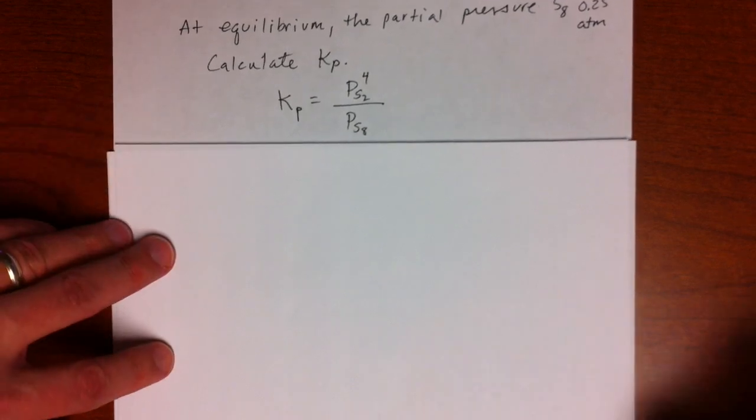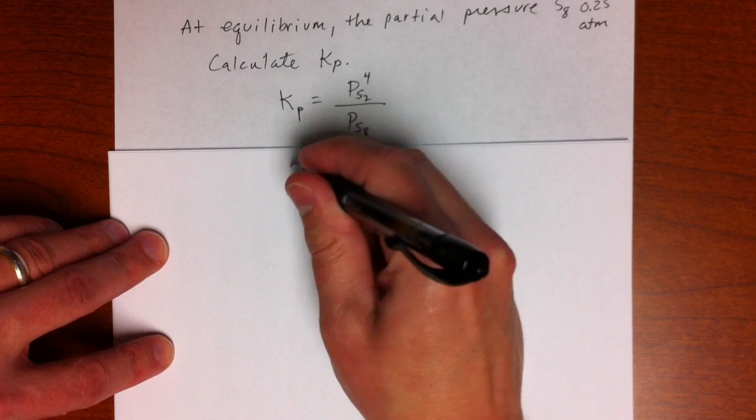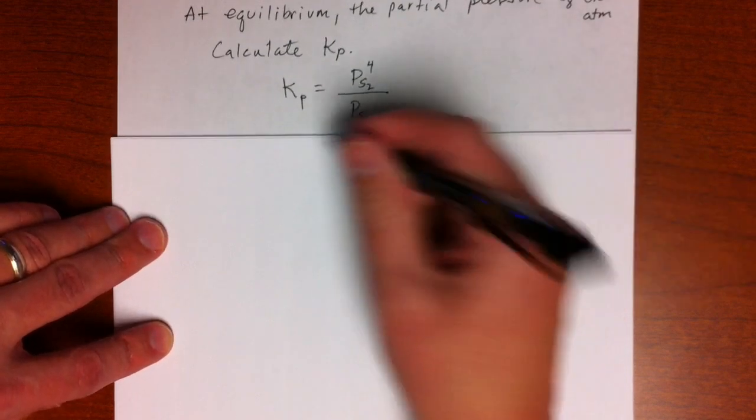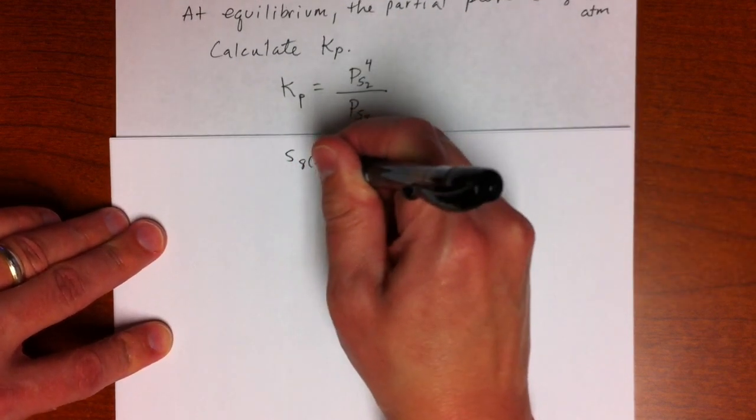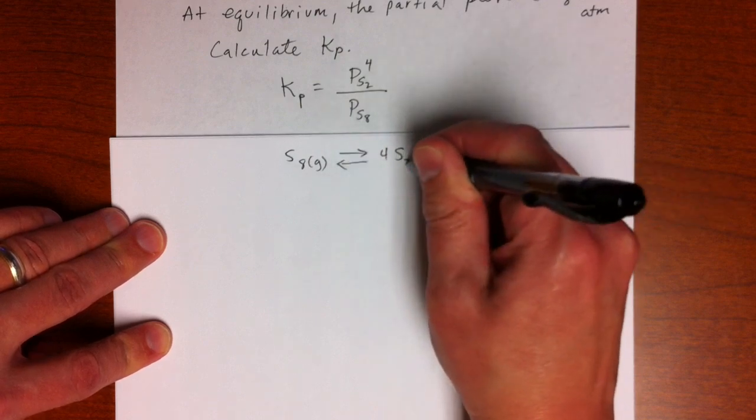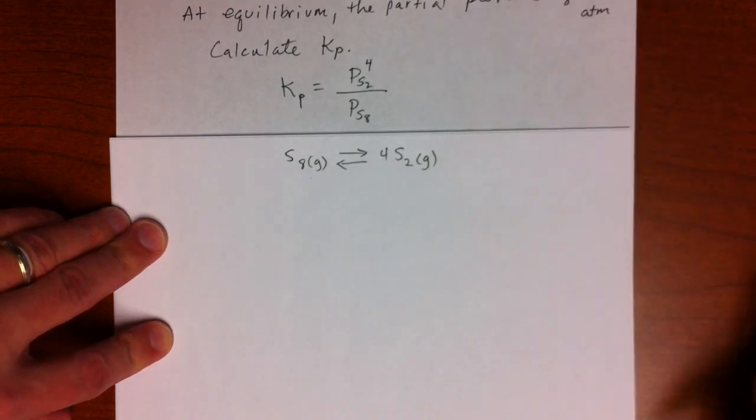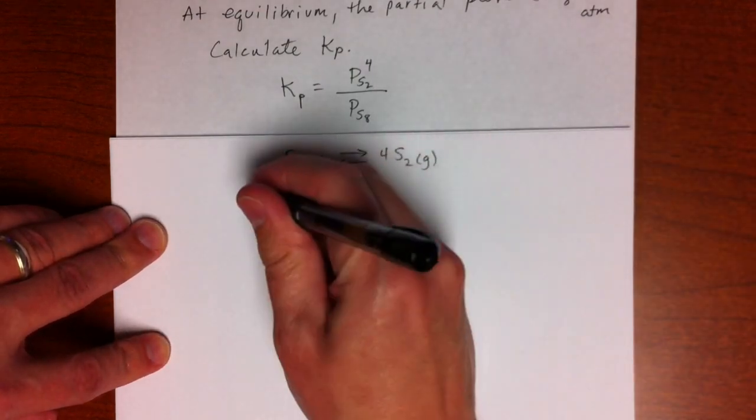So, let me rewrite the equation here. S8 decomposing to 4S2, okay? Notice they're both gases, so they're both going to be, as we said here, part of the equilibrium. So an ice table.